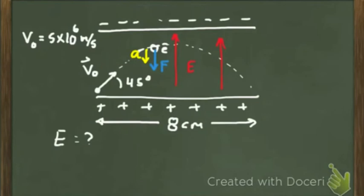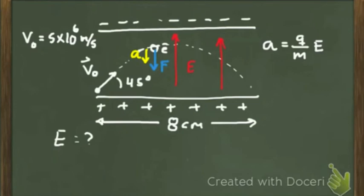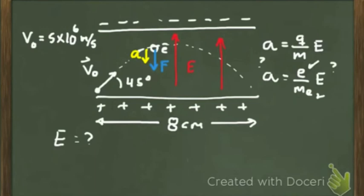This trajectory is a parabola since the acceleration is constant, because the force on the electron is constant, because the electric field inside the capacitor is constant. The acceleration of the electron is connected to the electric field through a equals (q/m) times E. Since this is an electron, we know its charge and mass, so if we find the acceleration, we can find the electric field.